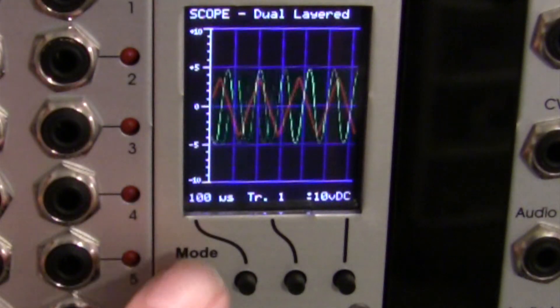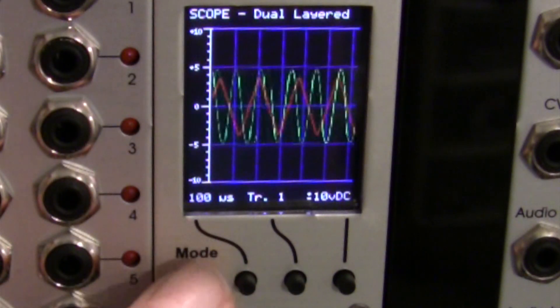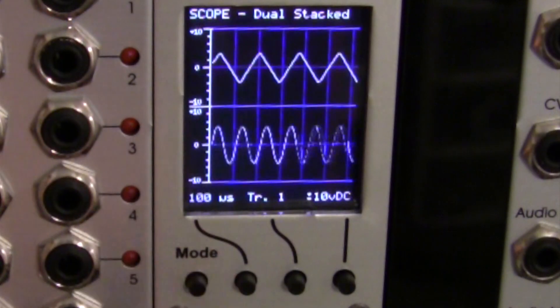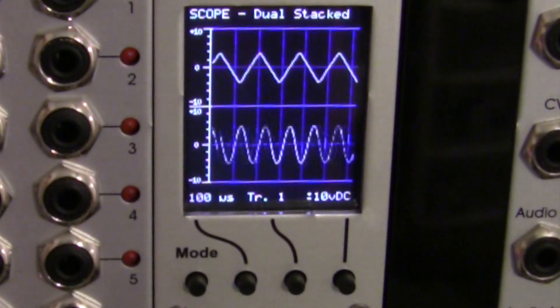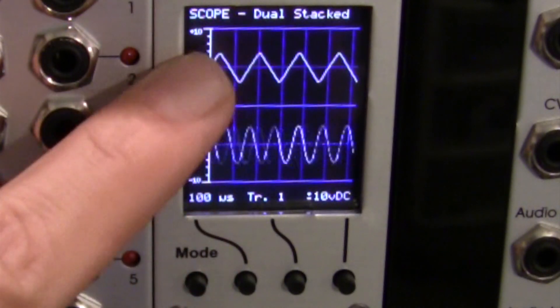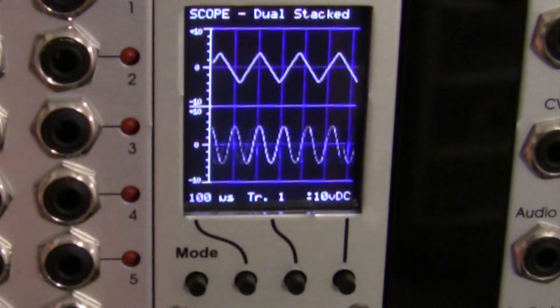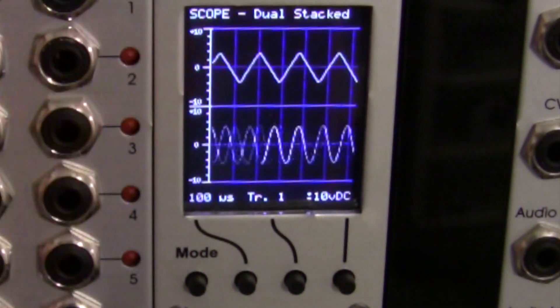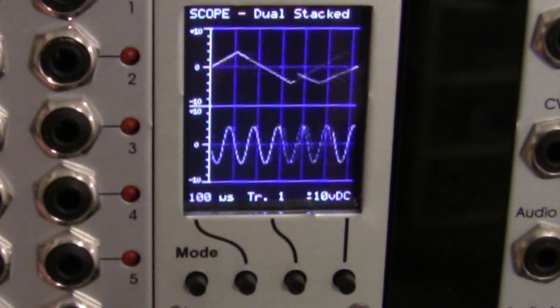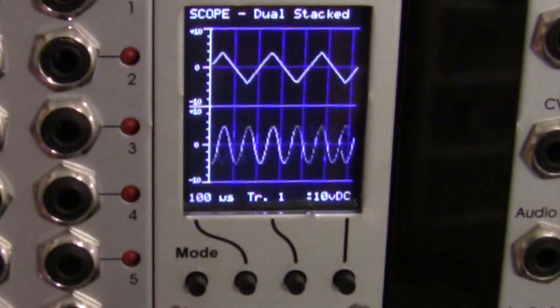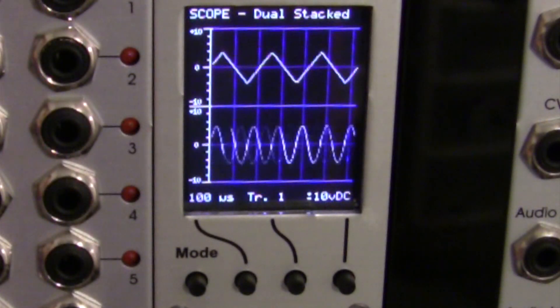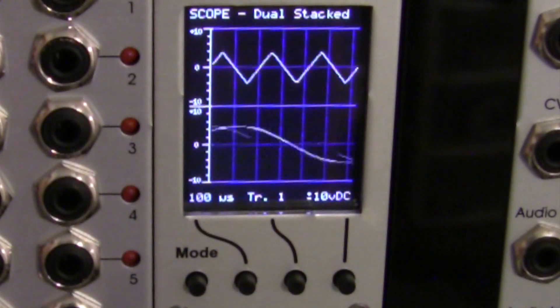So that is our dual layered mode. Let's go into our dual stacked mode. I think this is going to be my favorite one here. Now here you can view two different waveforms, one on the top, one on the bottom. So the one on the top is our audio frequency generator triangle wave. I can change the frequency of that if I want to, and then the bottom one is of course our Intellijel Dixie.